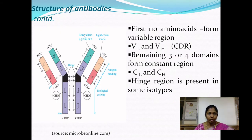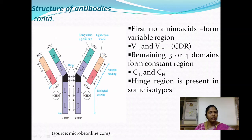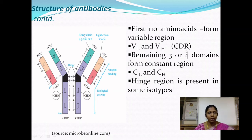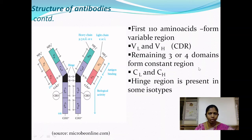The first domain, or the first 110 amino acids, forms the variable region. The VL and VH domains together form the antigen binding site, also called the Complementarity Determining Region (CDR). This is responsible for identification and interaction with the antigen. The remaining three or four domains form the constant region of the antibody molecule, designated as CL (constant region of the light chain) and CH (constant region of the heavy chain).